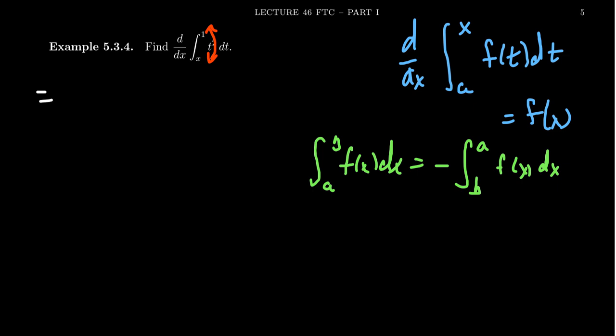So if you apply that to the original integral, we want to take the derivative with respect to x. But now we're going to get negative the integral from, I guess it was a specific number, from 1 to x of t squared dt.